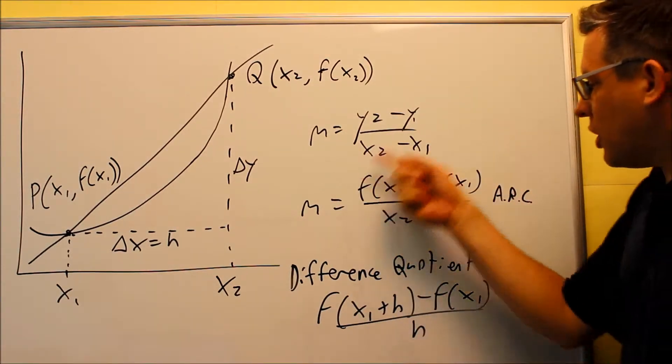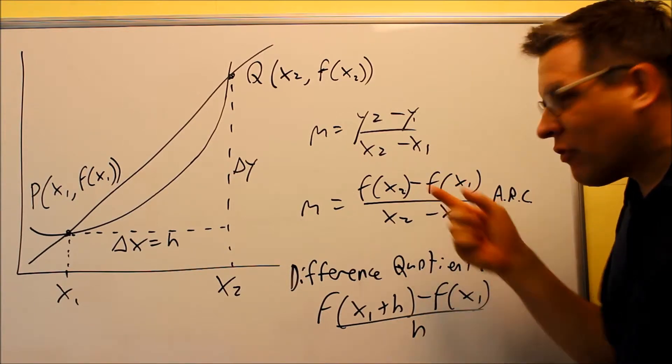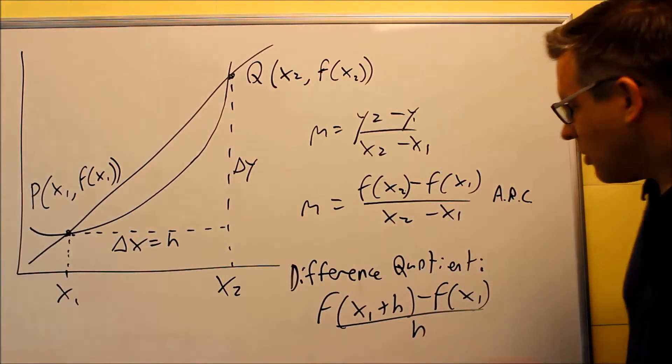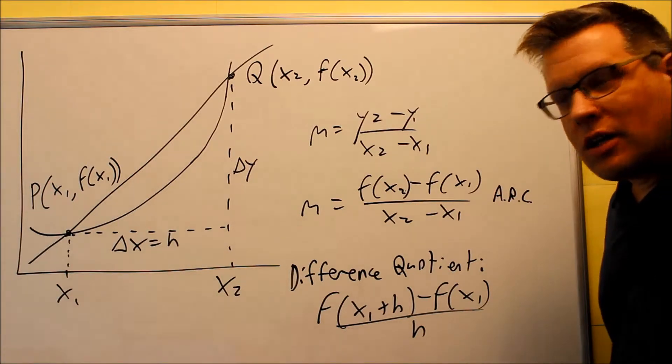Now this formula that we end up with here, that has a name. That's called the average rate of change. So ARC is what I'll abbreviate in this class.